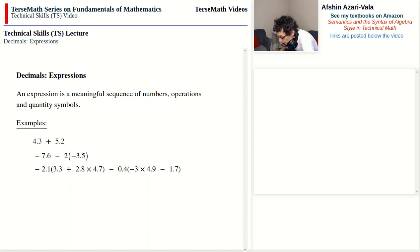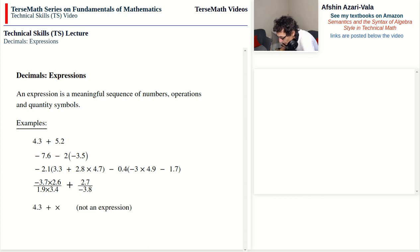...bracket open, negative 3 times 4.9 minus 1.7, bracket close. There could be division and multiplication within each term, such as negative 3.7 times 2.6 divided by 1.9 times 3.4 plus 2.7 divided by negative 3.8. But this one is not an expression: '4.3 plus times and then nothing' — we don't know whether we should add or multiply, and there's no clarity as to what to add or multiply. That's where meaningfulness comes in.